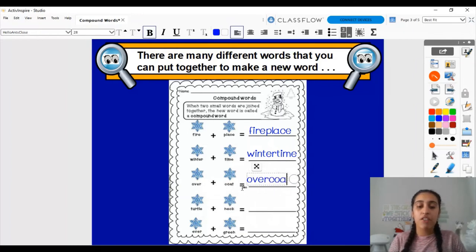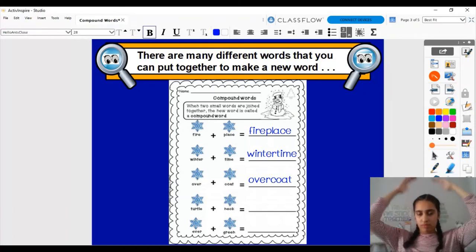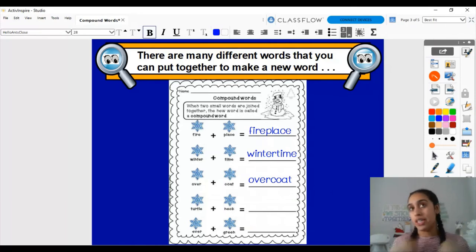Here we have the word over plus the word coat. And we have the word overcoat. And for some of you guys that don't know what an overcoat is, let's think about it. We know what the word over means, right? Over something, right? And we know what the word coat is. We put a coat on when it's very cold outside. So what can an overcoat mean?